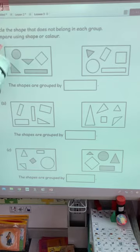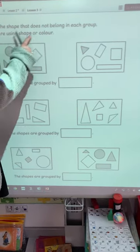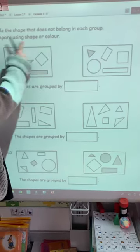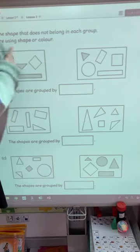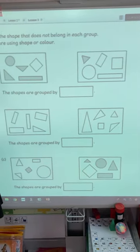It says here, circle the shape that does not belong in each group. Compare using shape or colour. So look at these. Which one is the odd one out? Draw a circle on the odd one out. Which one does not belong?